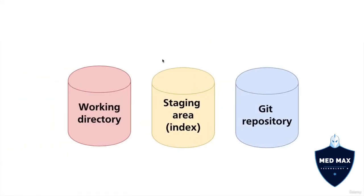The staging area, or index, is an intermediate area between the working directory and the git repository. Before taking files from the working directory and copying them into the git repository, files must first be placed into the staging area. Similarly, when you check out files from the git repository, they move through the staging area into the working directory.